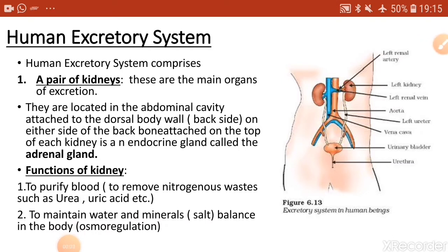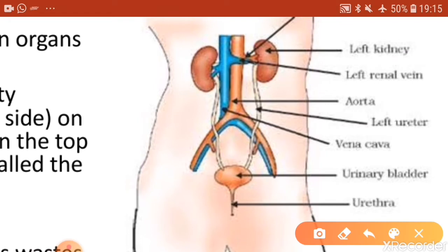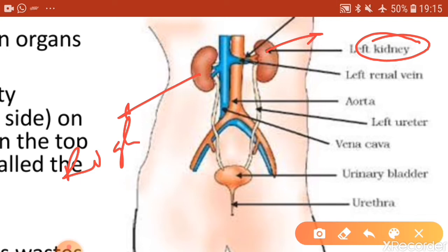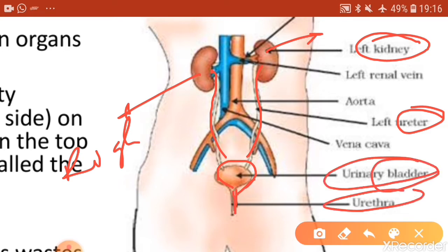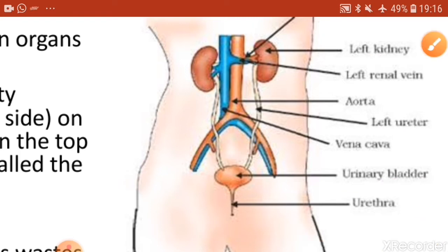The human excretory system is involved in both removal of waste materials and osmoregulation. The important organs are: a pair of kidneys — the left kidney and the right kidney — then a pair of ureters, which are tubes arising from the kidneys, then the urinary bladder, and the urethra. These four — kidneys, ureters, urinary bladder, and urethra — are the main organs of excretion.